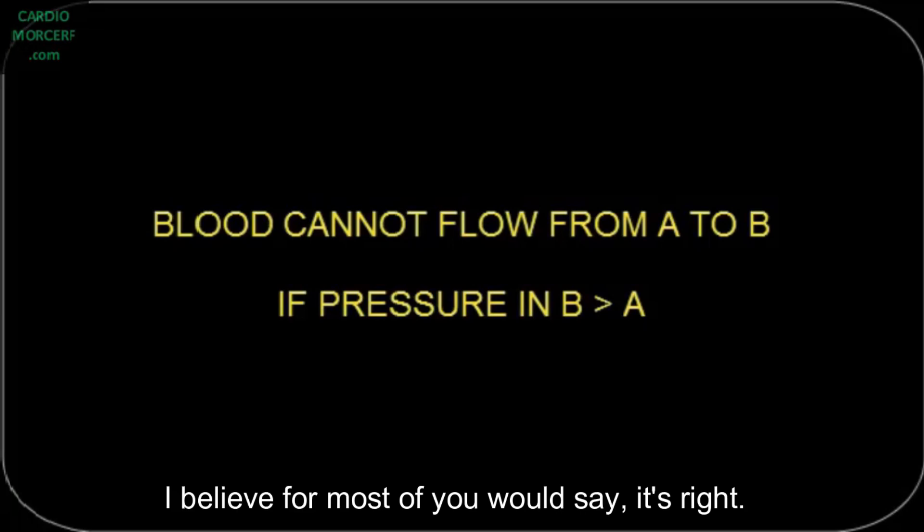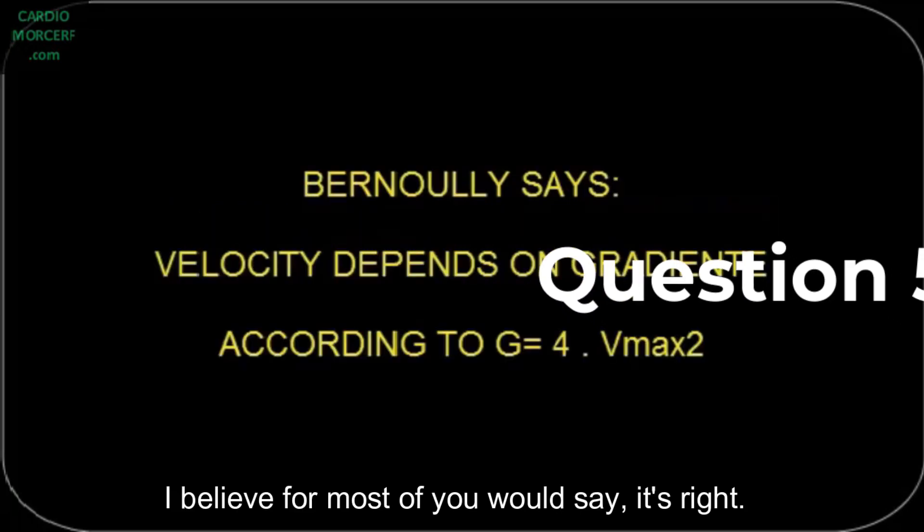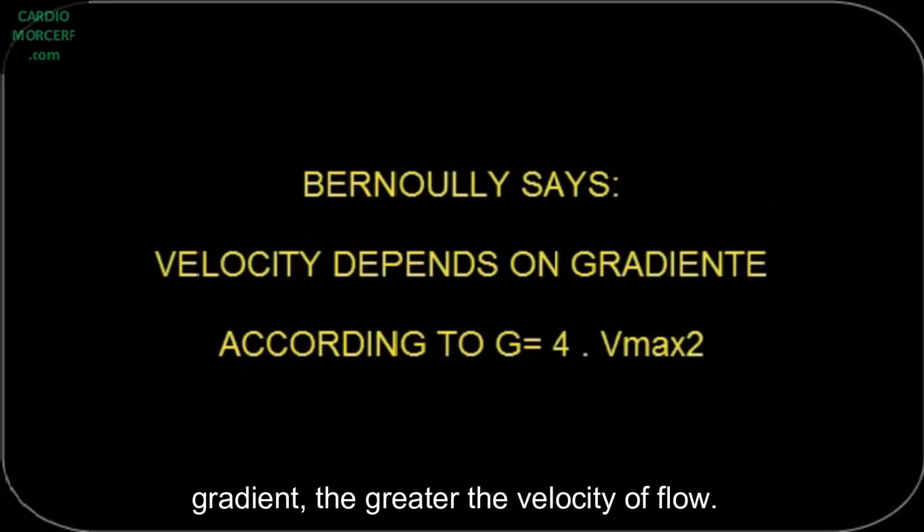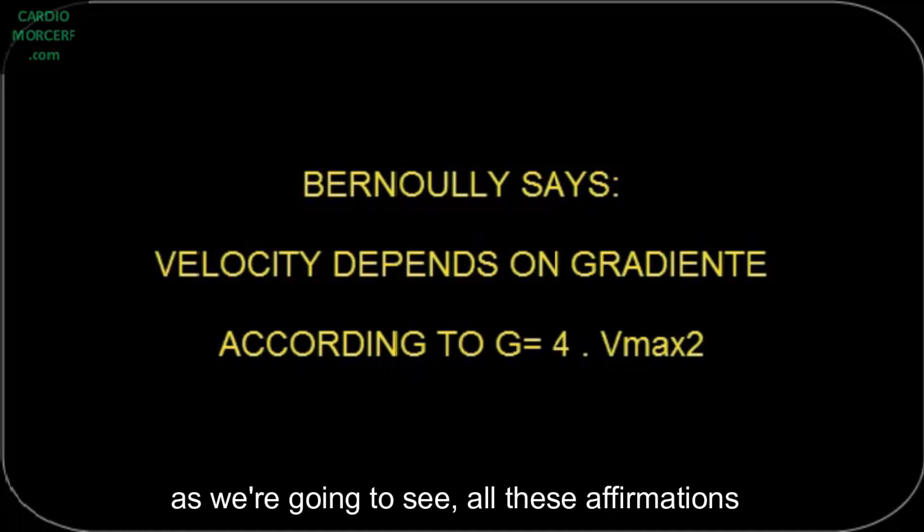Another question. Bernoulli effect says that the greater the gradient, the greater the velocity of flow. In other words, it is the gradient between two points, A and B, that produces a velocity of blood. According to the equation, G equals 4 times Vmax squared. Right or wrong? I believe most of you will say it's right. But, as we're going to see, all these affirmations are wrong.